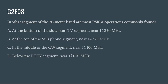G2E08: What segment of the 20 meter band are most PSK-31 operations commonly found? A. At the bottom of the slow scan TV segment near 14.230 MHz. B. At the top of the SSB phone segment near 14.325 MHz. C. In the middle of the CW segment near 14.100 MHz. Or D. Below the RTTY segment near 14.070 MHz. The correct answer is D: below the RTTY segment near 14.070 MHz.